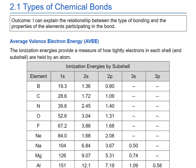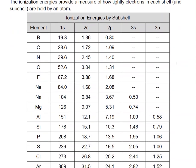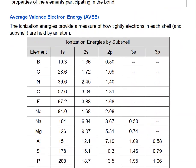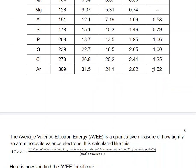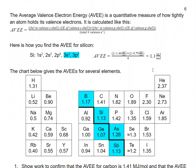First we're going to talk about average valence electron energy (AVEE). This chart gives the ionization energies by subshell — the outer shell S and P electrons for several elements. To calculate AVEE, which is a measure of how tightly an atom holds onto its valence electrons, we multiply the number of electrons in the S shell by the ionization energy of the S shell, add the product of the number of valence P electrons times the ionization energy of the P shell, then divide by the total number of valence electrons.